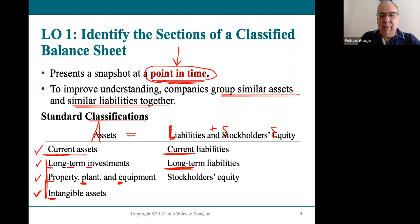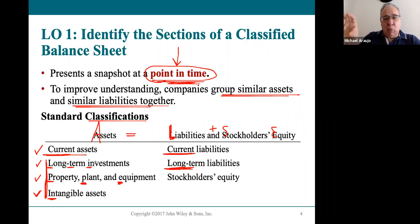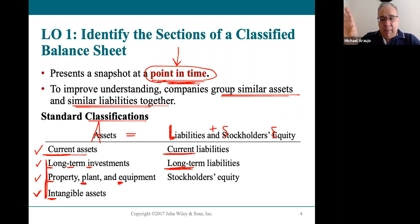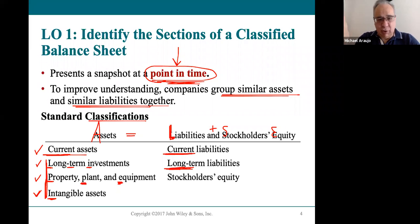Walmart, for example, might use some cash to buy stock in one of their suppliers. They own shares of stock in that supplier — but does that help Walmart sell goods? No. Walmart's business is selling goods, and having stock in another company does not help them sell any goods. So that's a long-term investment. They own it, it has value, but it doesn't contribute to selling their products.